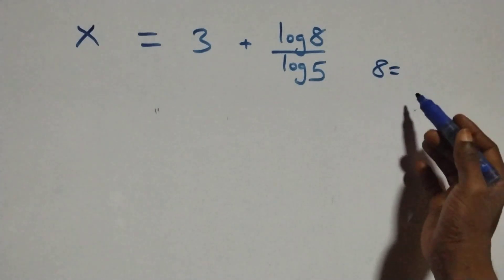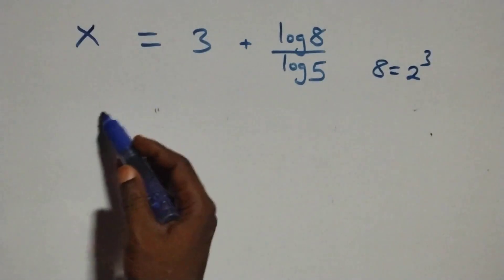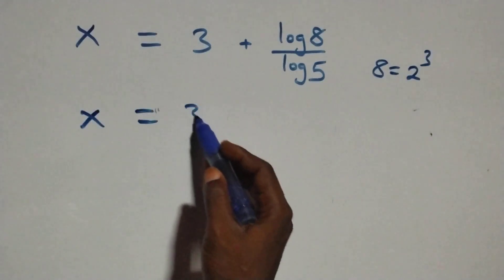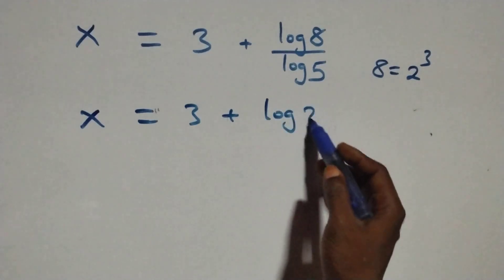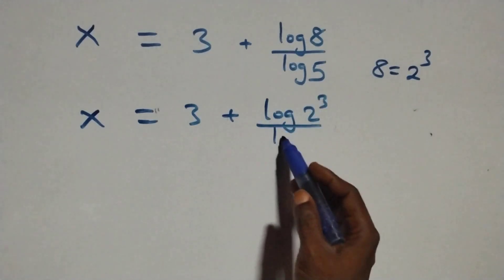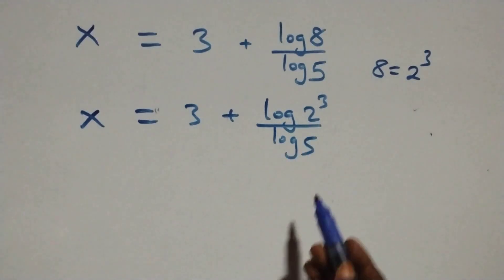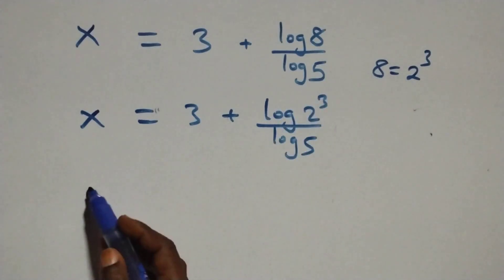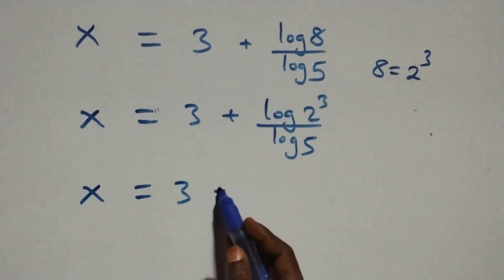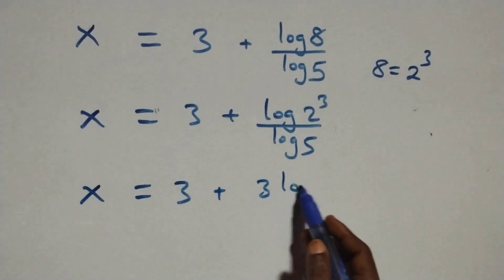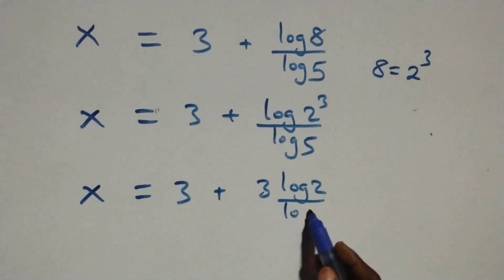Eight can be expressed as two cubed. So we have x equals three plus log of two cubed over log five. Applying the power rule of logarithm, three comes down and we have x equals three plus three log two over log five.